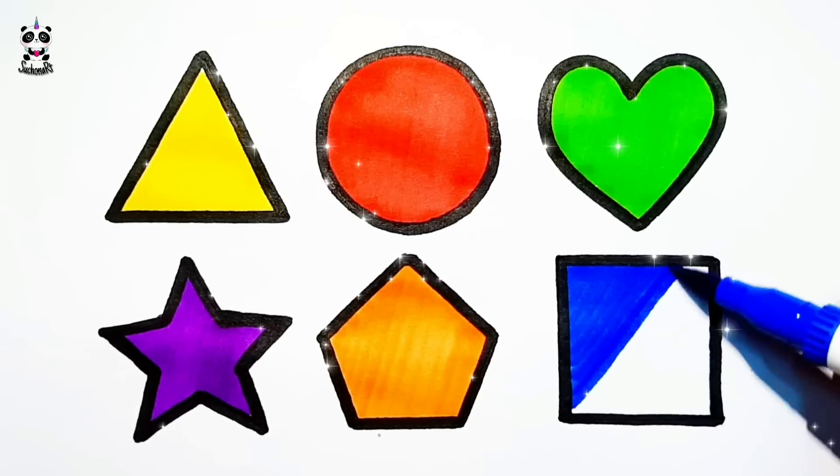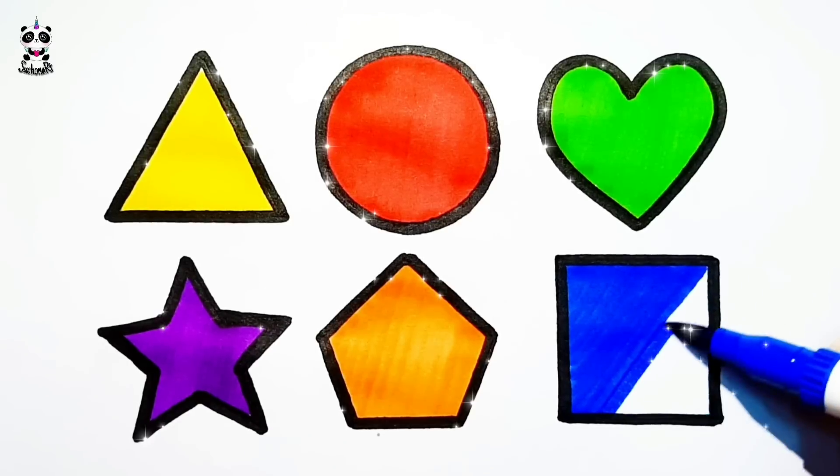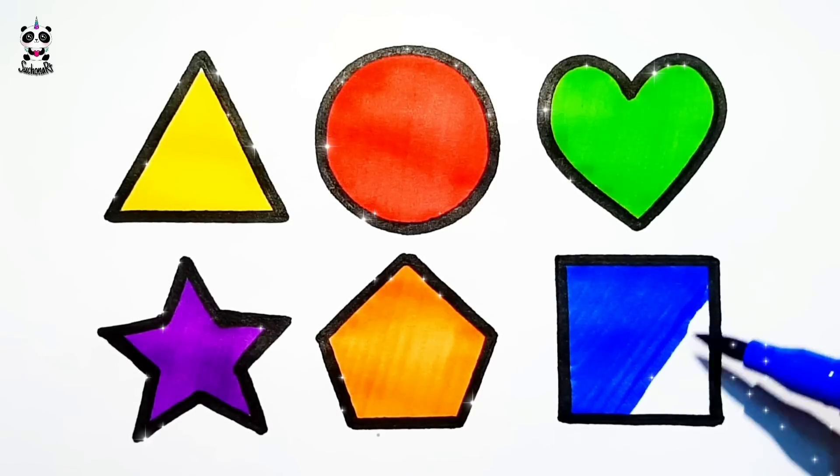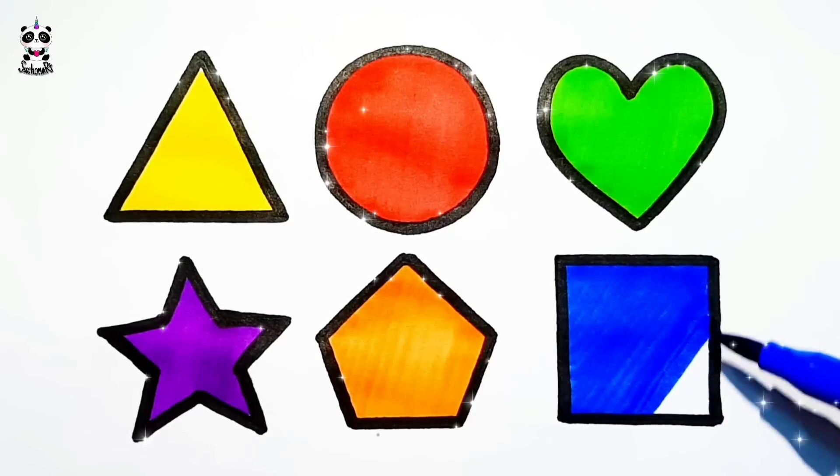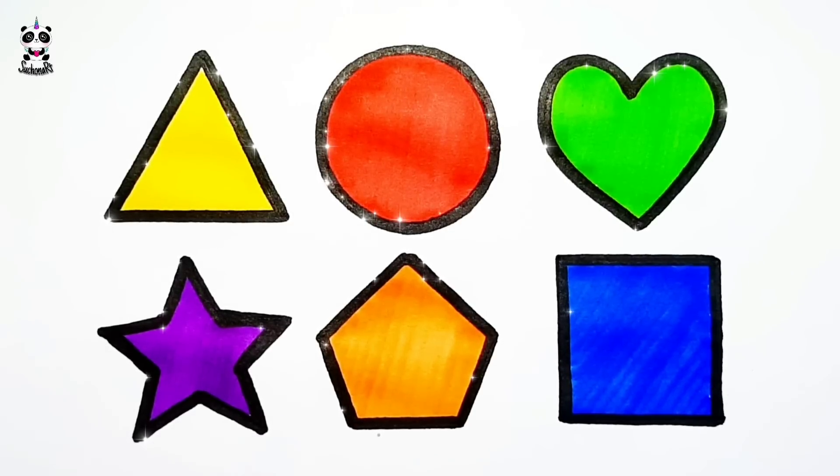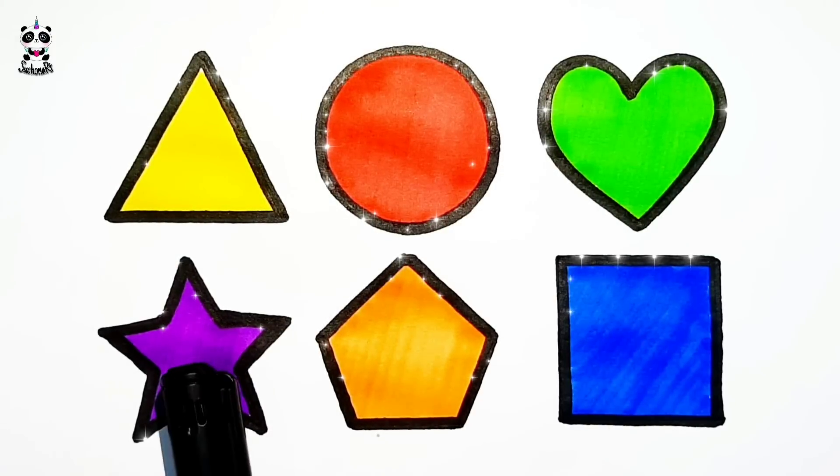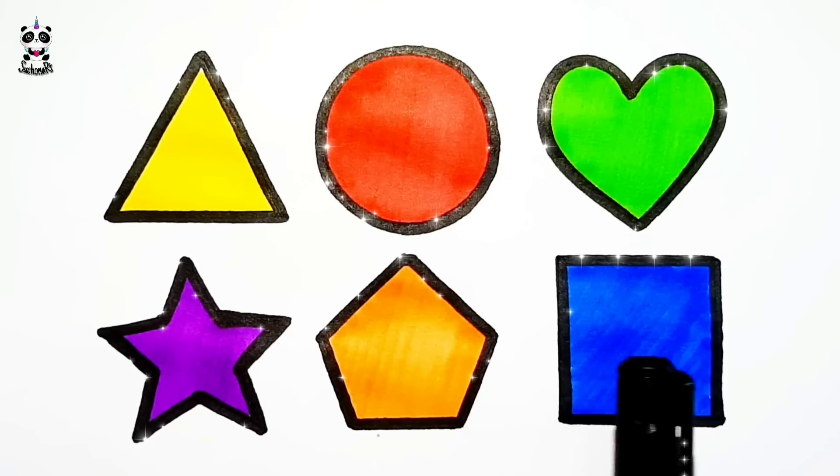A-B-C-D-E-F-G, H-I-J-K-L-M-N-O-P, Q-R-S-T-U-V, W-X-Y-and-Z. Now I know my ABCs. Triangle, Circle, Heart, Star, Pentagon, Square.